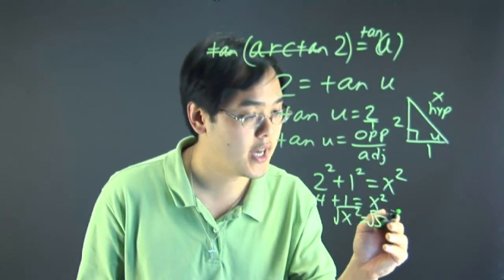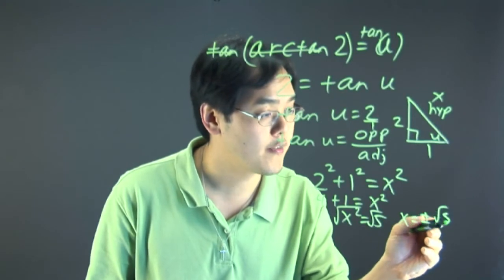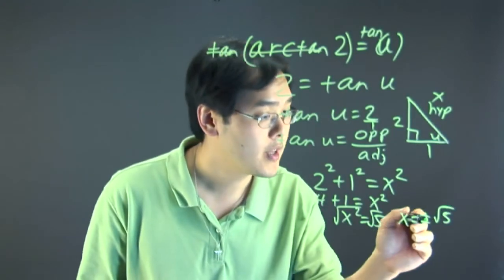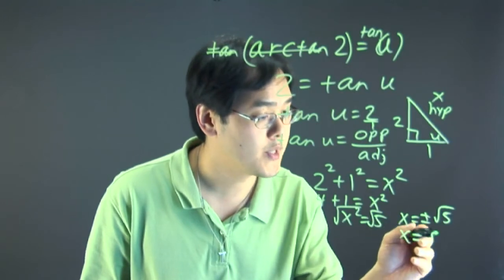Take the square root of both sides: x = ±√5. Now because sides of a triangle should be positive, you want to just take the positive square root of 5.